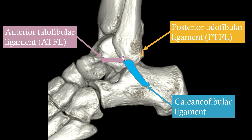Most often you have injuries of the anterior talofibular ligament, and sometimes with a really severe injury you can also have injuries of the calcaneofibular ligament. It's very rare to have an isolated calcaneofibular ligament injury with an intact ATFL. If you see a CFL injury, give the ATFL a close look because they typically rupture together. The posterior talofibular ligament is very strong and is hardly ever injured unless there is a complete ankle dislocation.